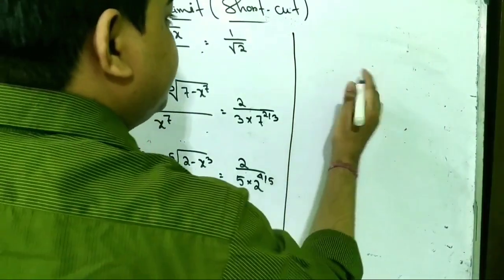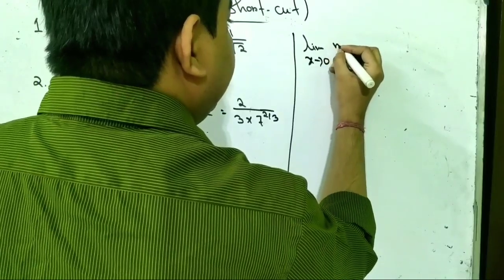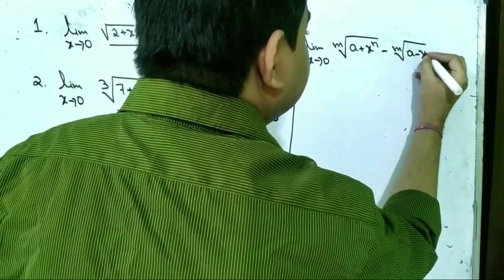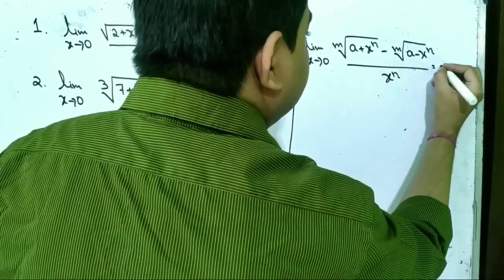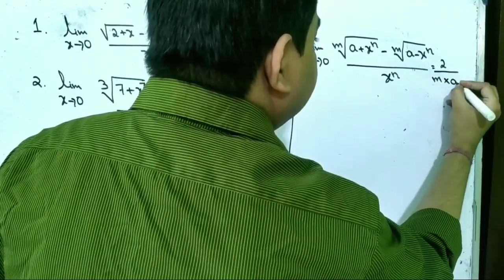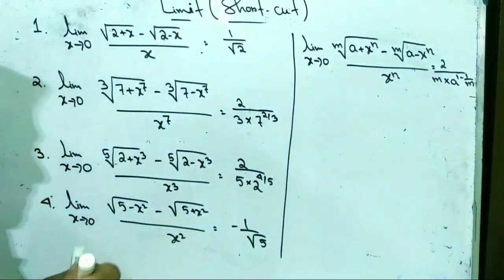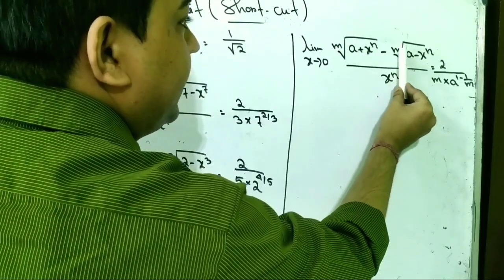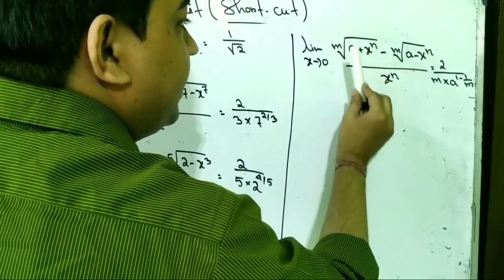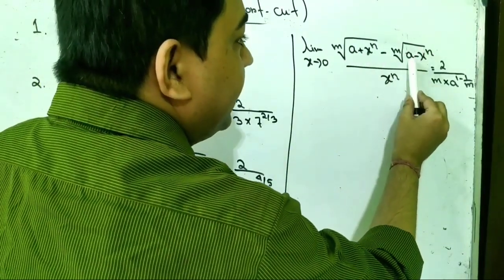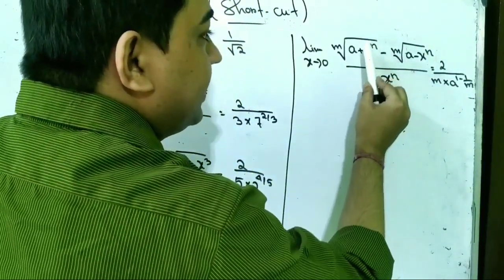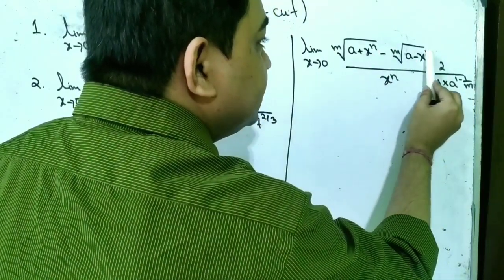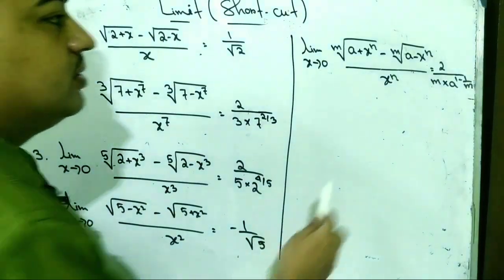See the procedure. The formula is: limit x tends to 0, mth root of (a plus x^n) minus mth root of (a minus x^n), by x^n, is equal to 2 by m into a to the power (1 minus 1 by m). Both terms must have the same mth root. The first term is a plus x^n and the second term is a minus x^n. The denominator matches the power in the numerator terms. In this type of limit, the value of x^n does not affect the result.